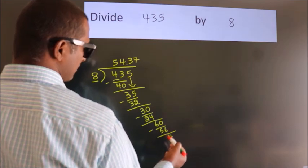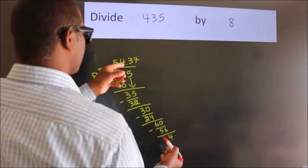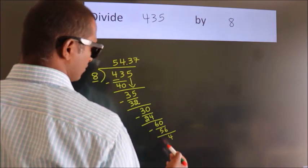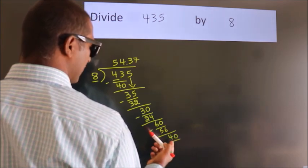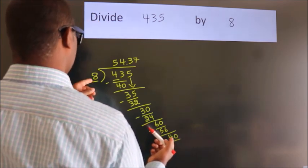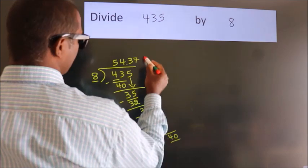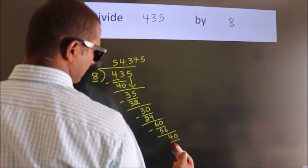After this, we get 40. When do we get 40? In 8 table. 8 fives 40.